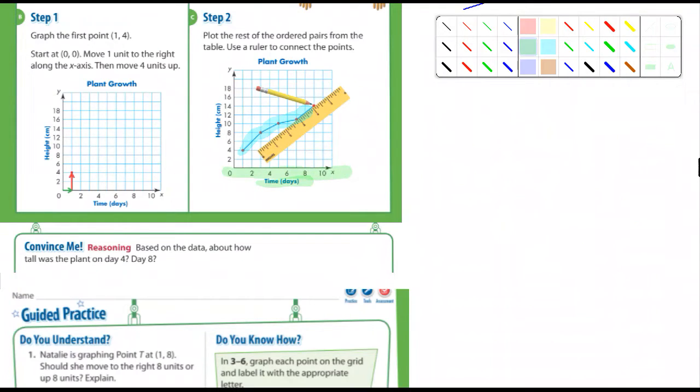the X value is the time and day. So these are the days right here. And so they're asking about day four and day eight. You should be able to do that. So I do want you to answer the convince me.